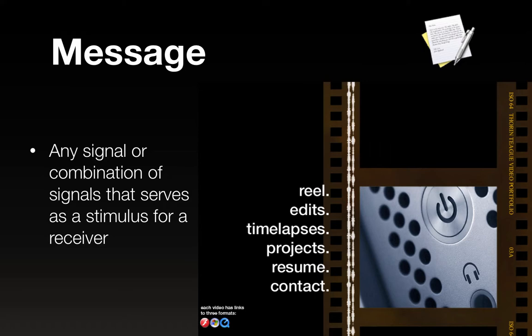We're going to have a couple of terms to learn about for this unit. The first one is message. These terms in and of themselves are really quite easy. We know what a message is. According to this course, Arts 102, it's any signal or combination of signals that serves as a stimulus for the receiver. The words that I'm saying right now — that's a message.